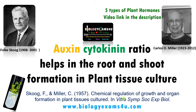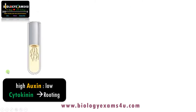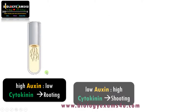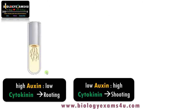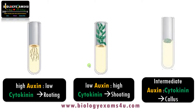Now let us see how this works. High auxin to low cytokinin concentration favors rooting in plant tissue culture, whereas low auxin to high cytokinin concentration favors shooting. Intermediate concentration of auxin and cytokinin induces callus.